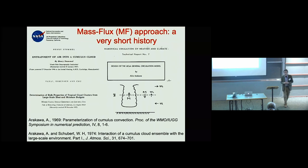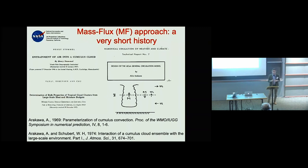The first person to actually develop this in terms of parameterization was Arakawa. It starts with a paper by Stommel — an oceanographer — in the late 1940s. The idea is that most of the flow at subgrid scales actually takes place in discrete plumes.